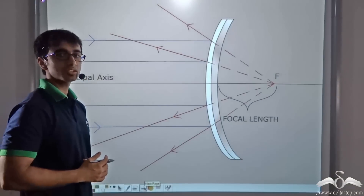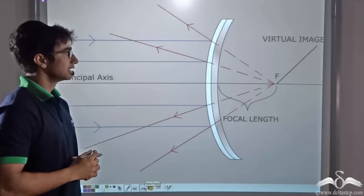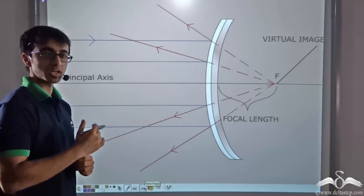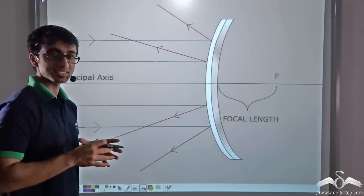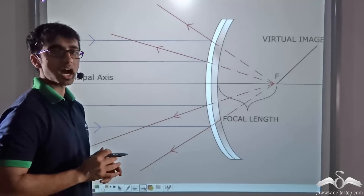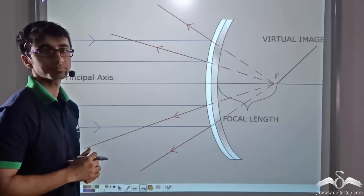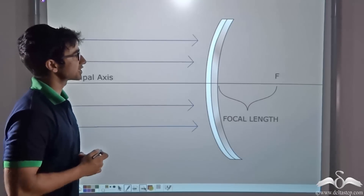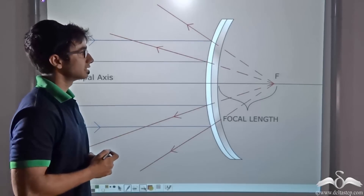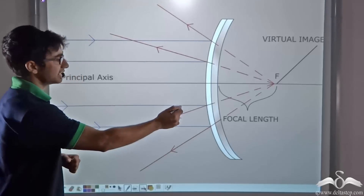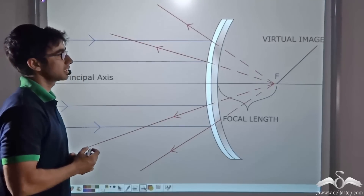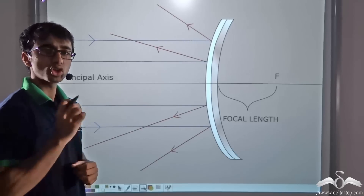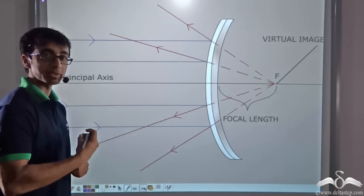Now what do you think happens in case of a convex mirror? In case of a convex mirror, if we keep a piece of paper in front of it, we will notice that the sun rays after reflection are not burning the piece of paper. This is because after reflection, the parallel rays of light are spreading in the outward direction. When the rays spread outward, they are not meeting at a point that can be obtained in space.